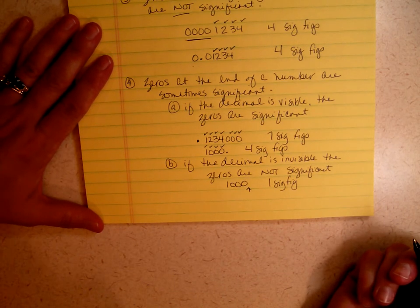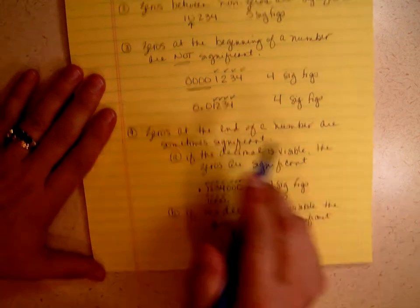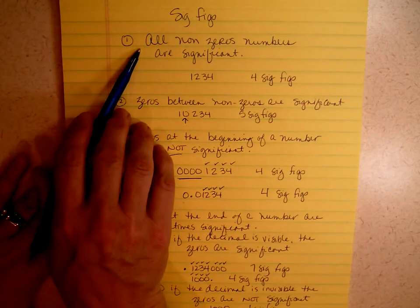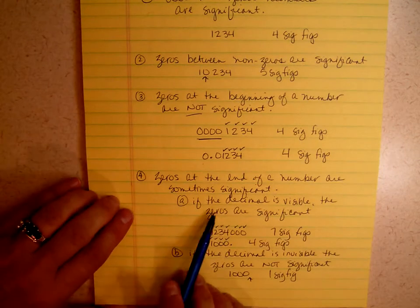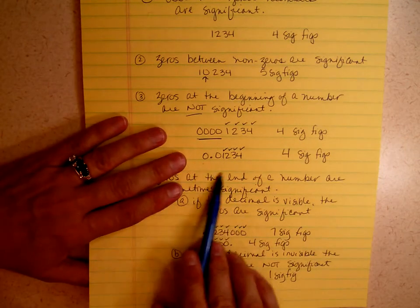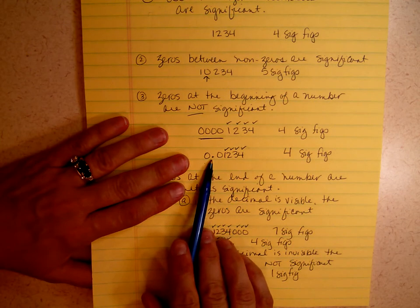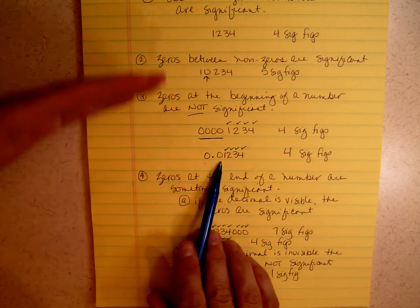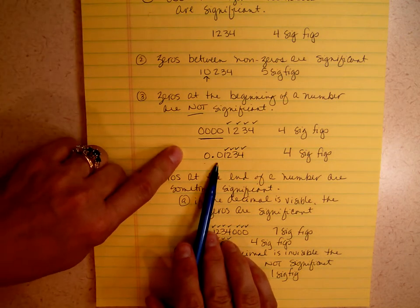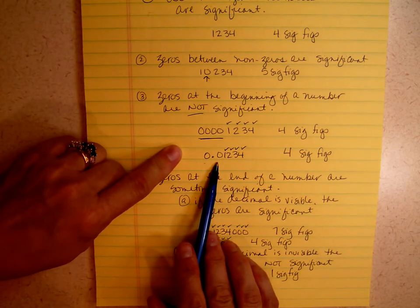The most important thing in doing significant figures is to take these rules and start with rule 1. Because what happens is, people will look at this number and they'll say, but the decimal is there, so that means they're significant.